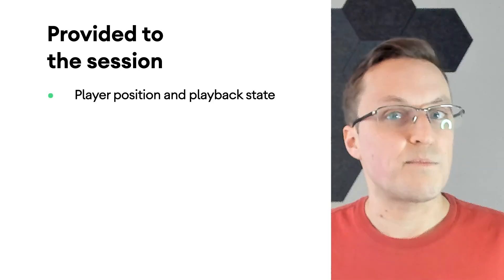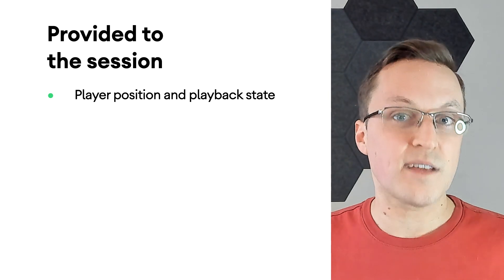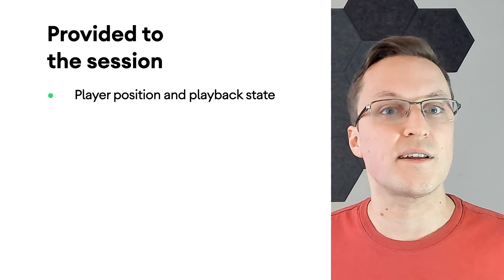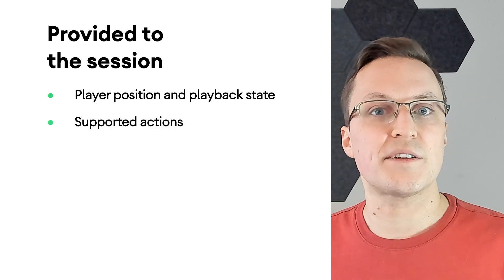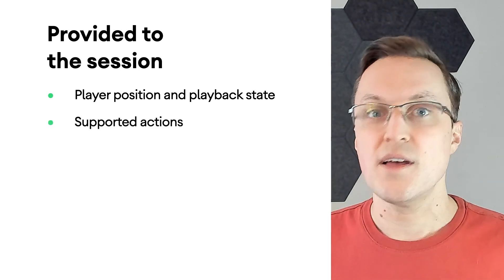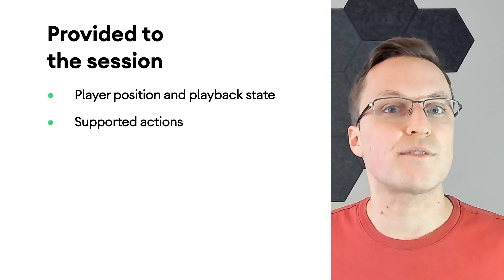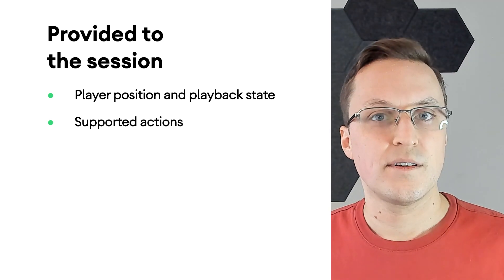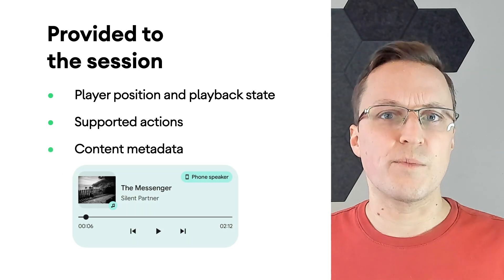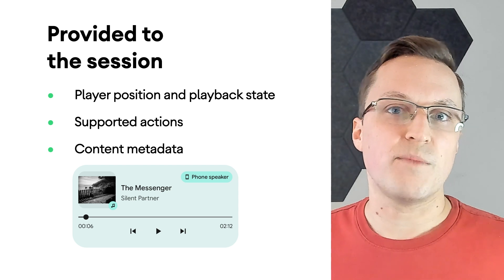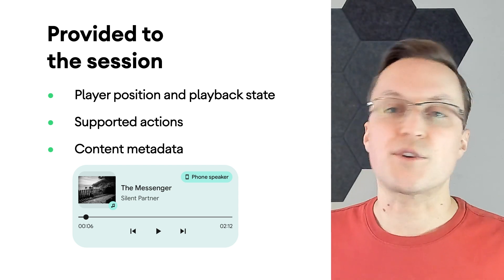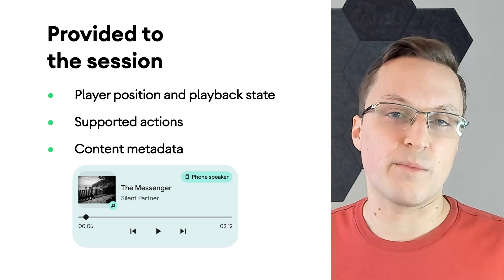There are four key components that your app should provide into the media session. First, the playback position and playback state are essential for the platform to reflect the current status of the media. Next, informing the media session of which actions are supported brings those controls onto the various surfaces for the user to interact with. The content metadata is critical when informing the user what is playing. And finally, queue items allow the media session to know what's up next and can take care of showing previous and next controls where applicable.